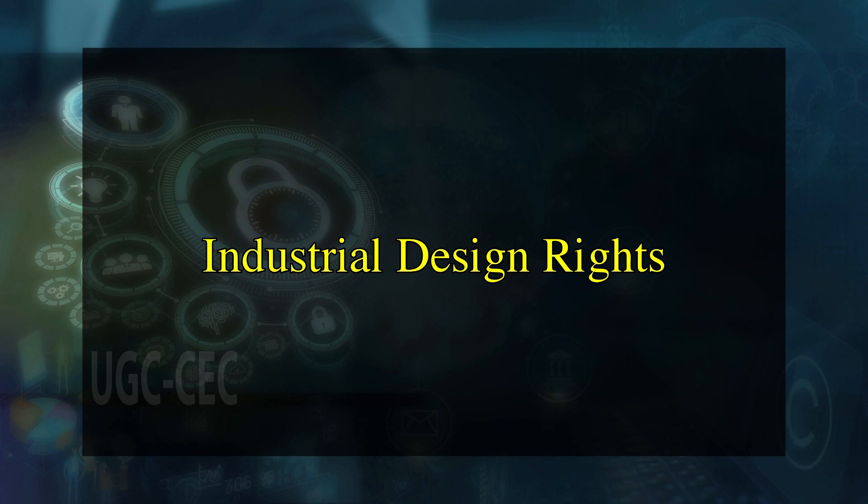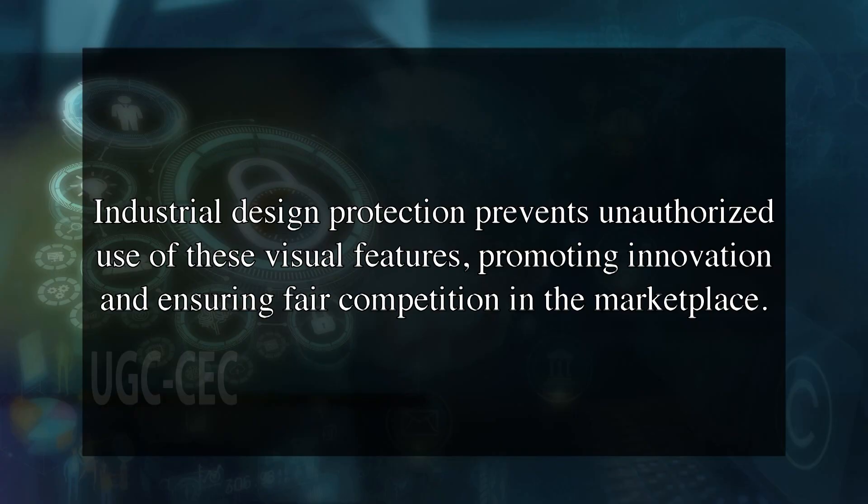Now we will be discussing industrial design rights. Industrial design rights refer to the legal protection granted to the visual design of objects that are not purely utilitarian. These rights aim to safeguard the unique and ornamental aspects of a product such as its shape, configuration, surface, ornamentation or color. Industrial design protection prevents unauthorized use of these visual features, promoting innovation and ensuring fair competition in the marketplace.